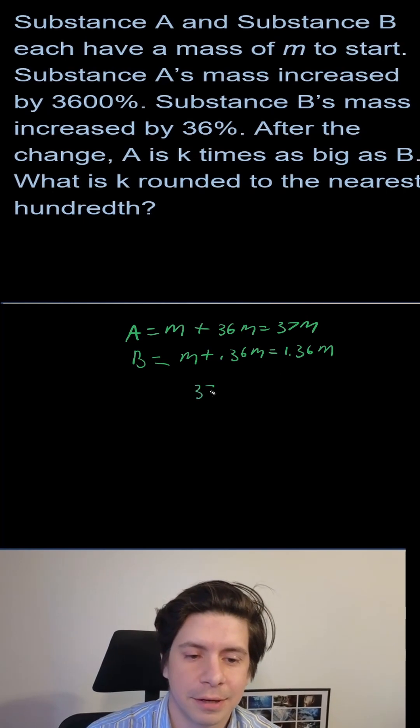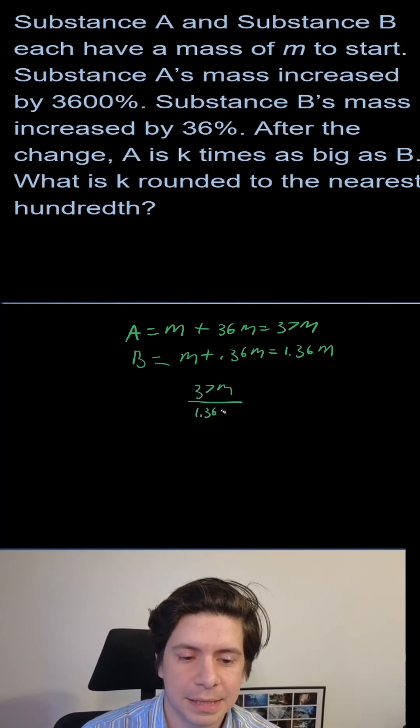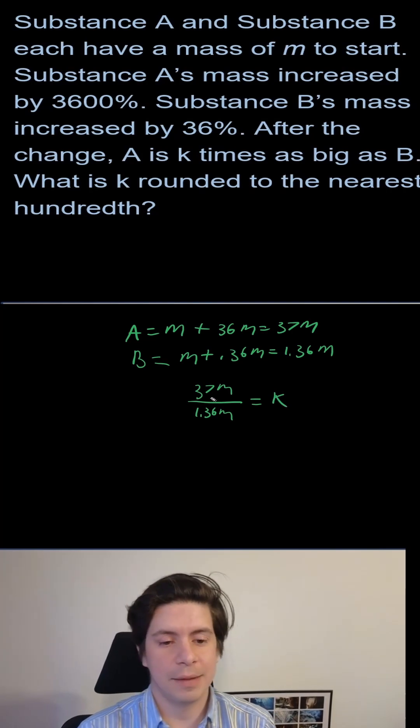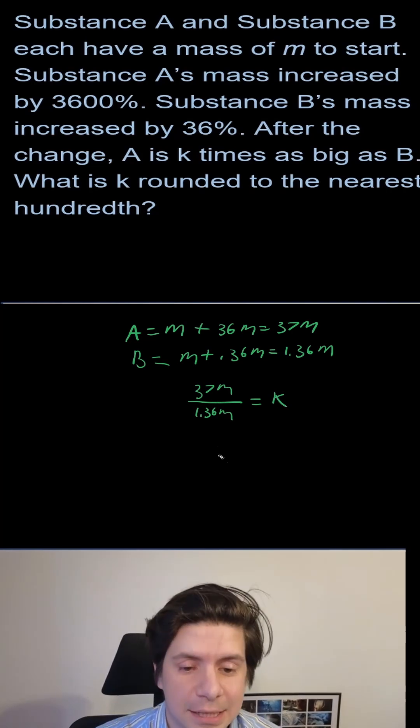37m over 1.36m equals k. And then what will that be? If you do that in Desmos, you're just going to get k equals 27.2.